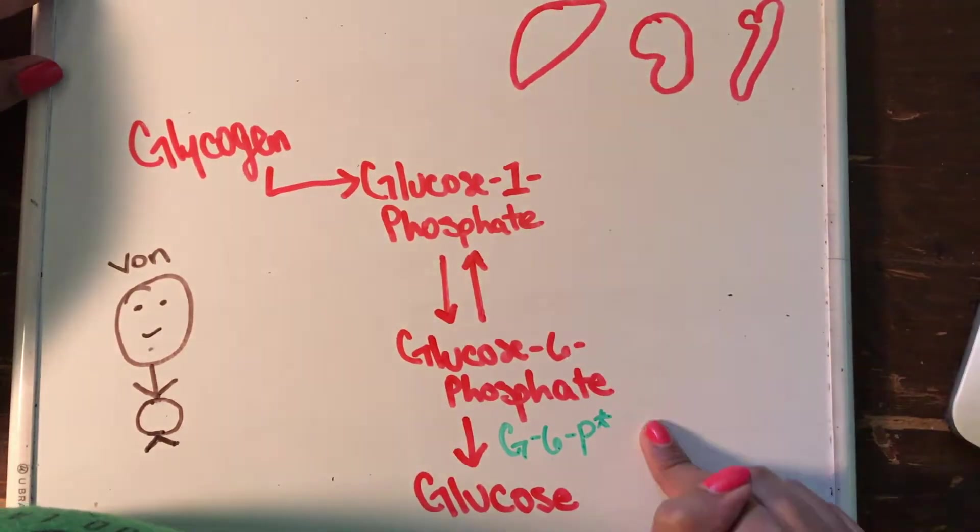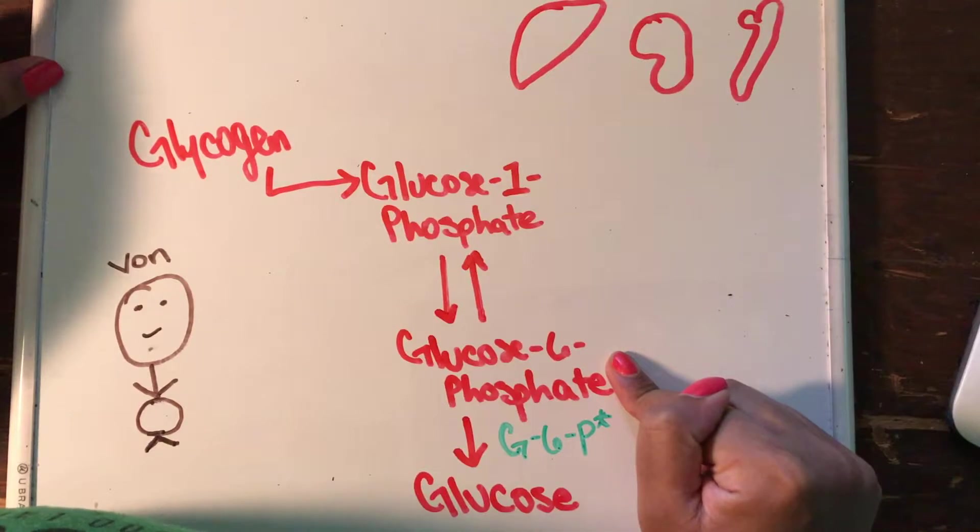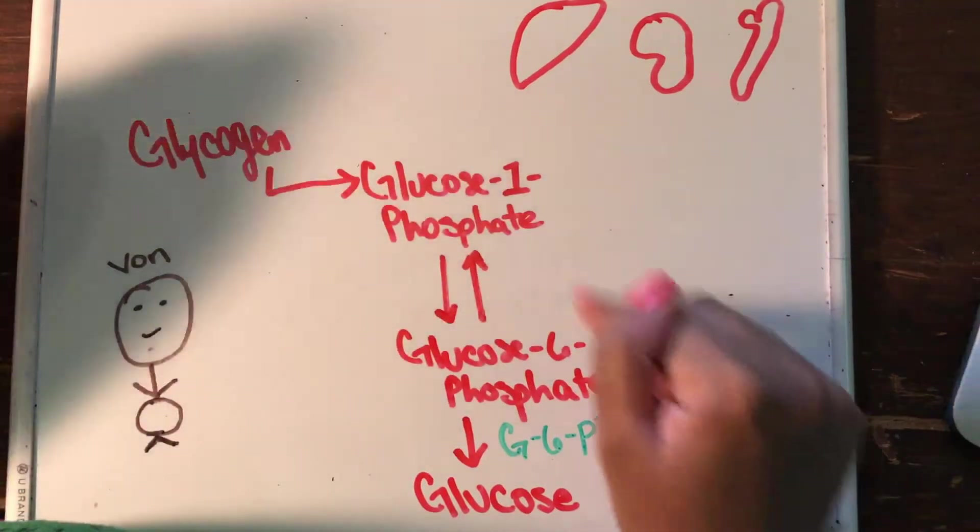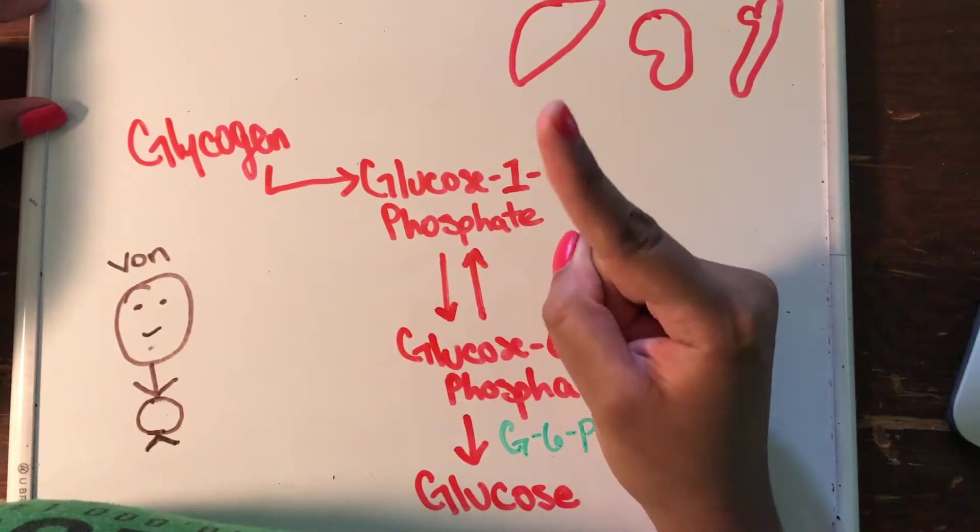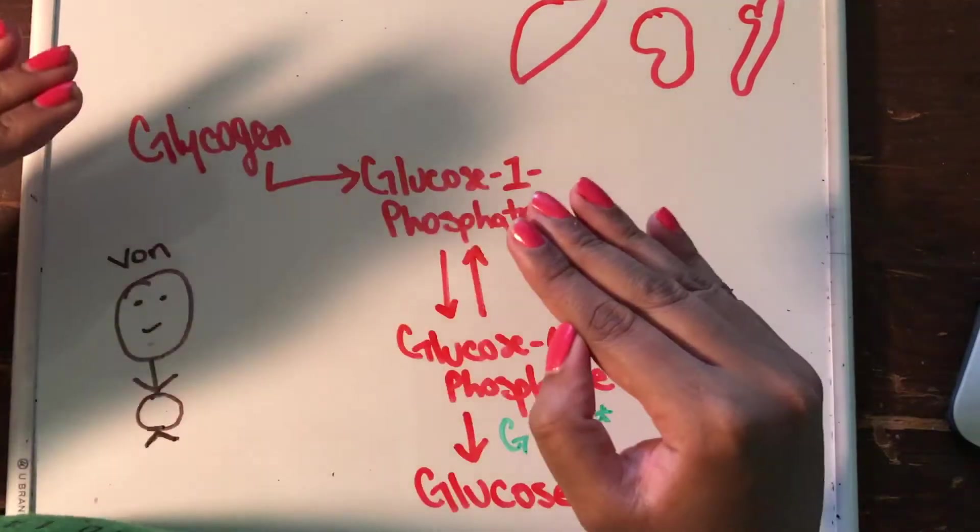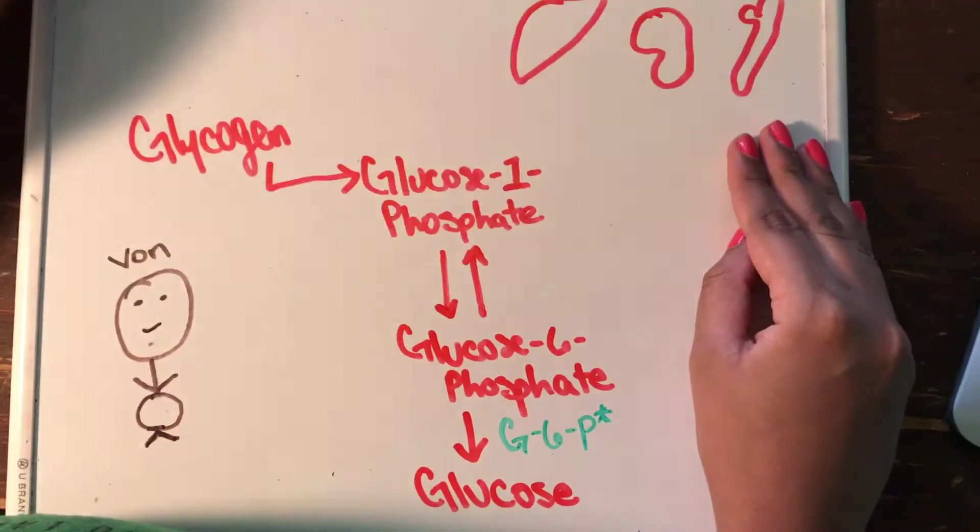So now, I have a deficiency in glucose 6-phosphatase, buildup of glucose 6-phosphate, which is pulling the water into the cell. Now, I'm getting hepatomegaly. Now, when my liver is affected, all of its functions are being affected. So let's start with the most common one.